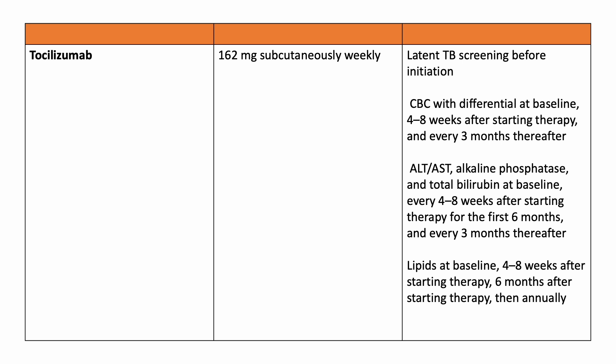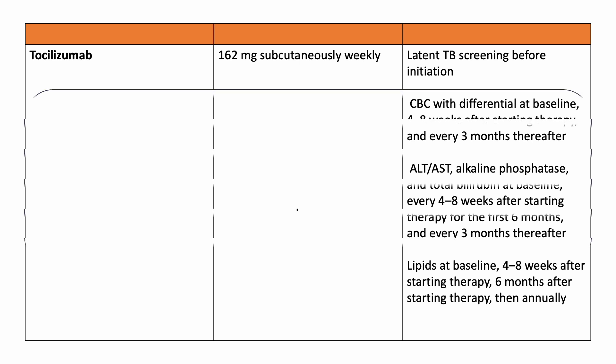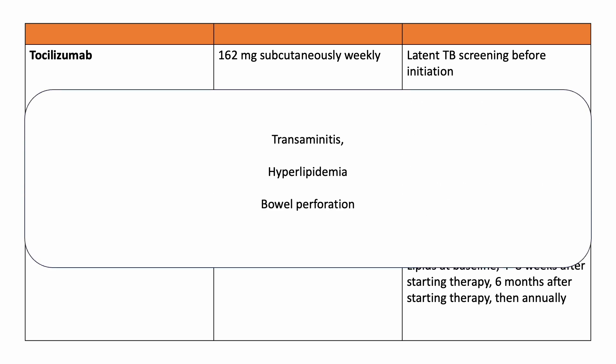The last drug is tocilizumab, dosed at 162 mg subcutaneously weekly. Latent TB screening should be done before initiating. CBC with differential at baseline and after 4 to 8 weeks of starting therapy, then 3 monthly thereafter. Liver function tests are very important: baseline, then every 1 to 2 months for the first 6 months, then 3 monthly. A lipid profile should also be monitored. Side effects include transaminitis, hyperlipidemia, and bowel perforation — always ask the patient about abdominal pain.